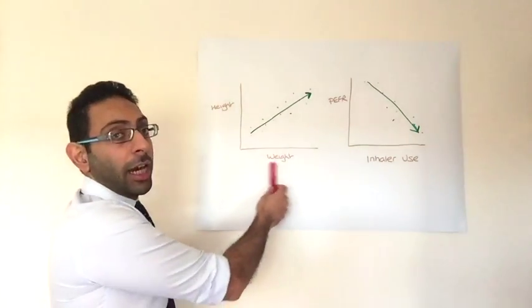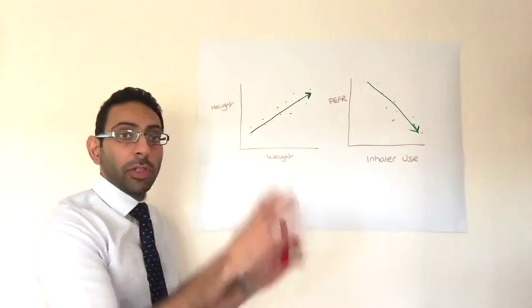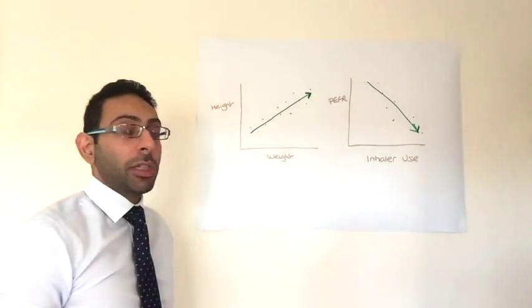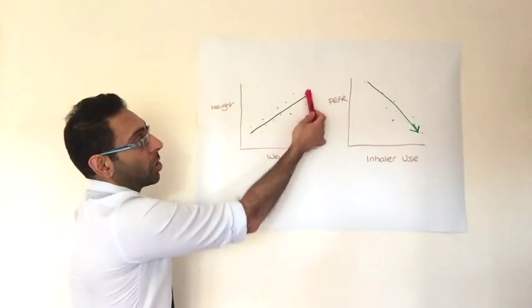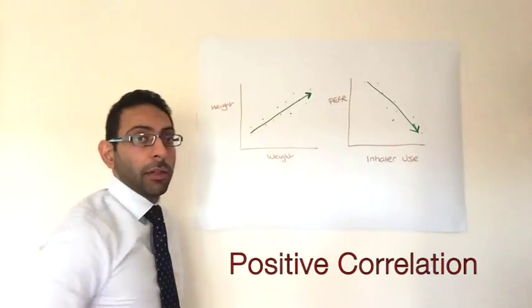So if you start with the first one, you've got height against weight here and you can see there's lots of little dots plotted. So you plot them on your axis and you look for what we call a line of best fit. You try and draw a line, see if there is one. So in this case, it's going from bottom left to top right. So that's what you call a positive correlation. As one gets bigger, the other gets bigger as well.